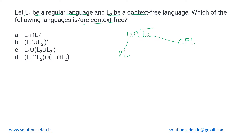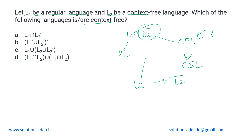We have L2 complement. Is CFL closed under complementation? No, it is not closed. But context-sensitive language is closed under complementation, so we can say that every CFL is also a CSL. Because CSL is closed under complementation, L2 bar will also be a CSL. We are taking the intersection of a regular language with a context-sensitive language, so the result will also be a CSL — not a CFL. So we'll reject option A.